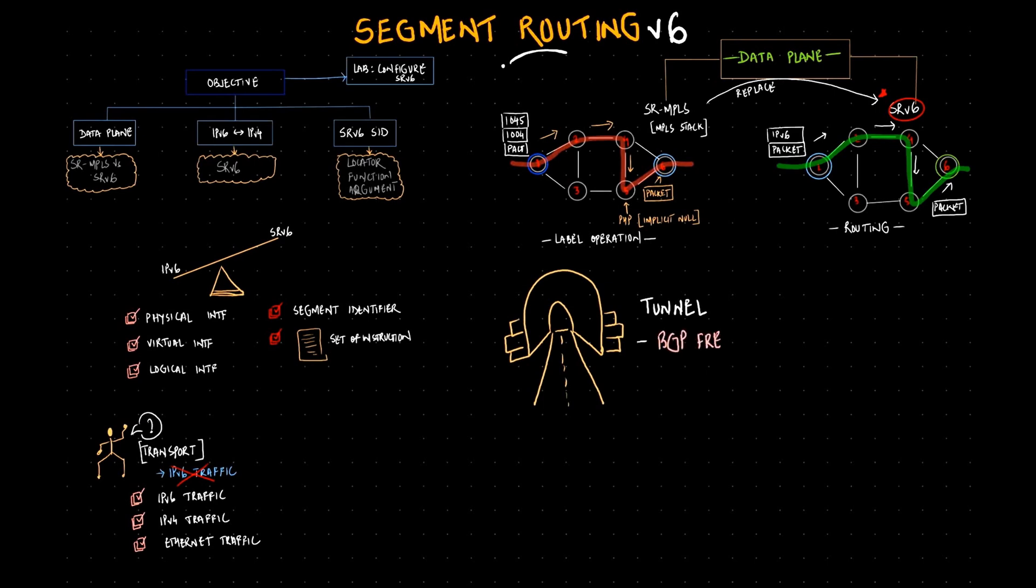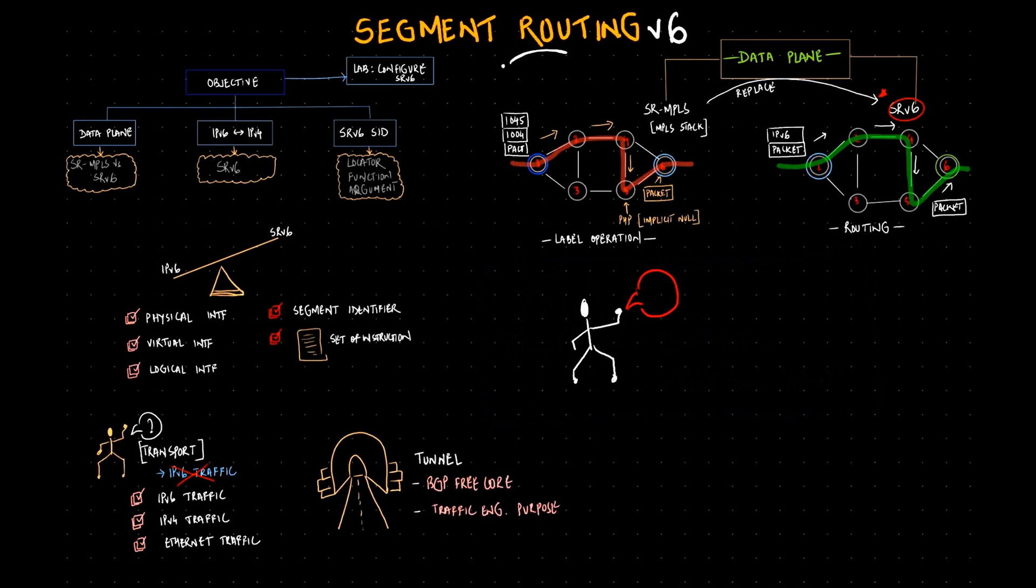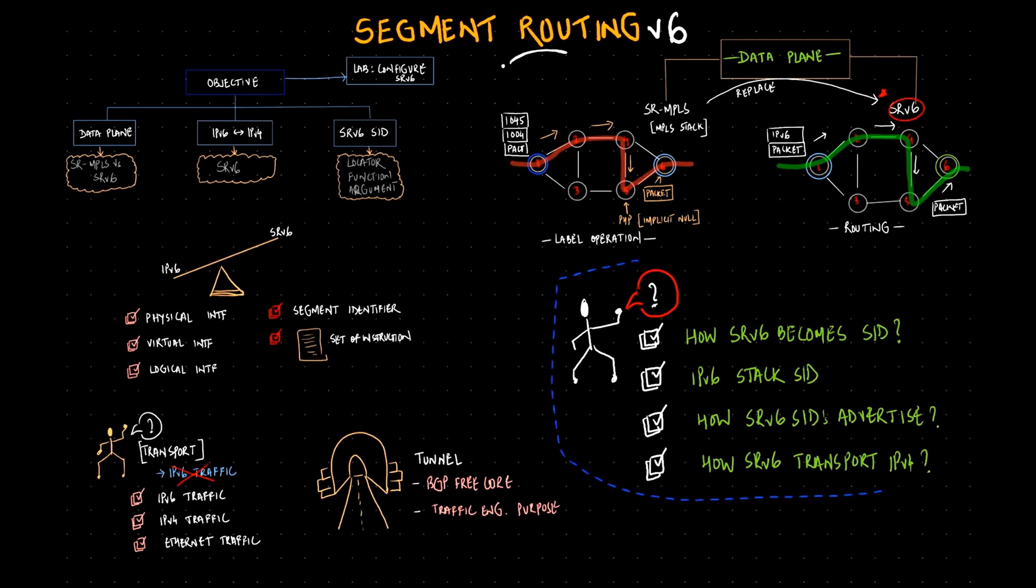Based on that tunnel it will run across a BGP free core path or for traffic engineering purposes. The question is: how does IPv6 become a SID? How will IPv6 create a label stack like an MPLS stack, and how will it get advertised? How can we transport an IPv4 payload or an ethernet payload with IPv6? How will SRv6 transport my IPv4 payload?